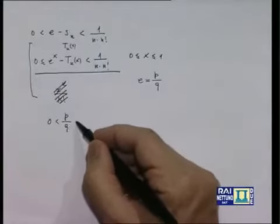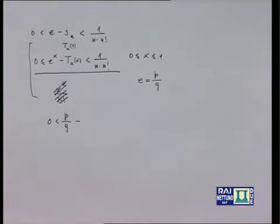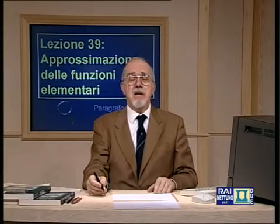Dimostrare una tesi per assurdo vuol dire assumere come ipotesi momentanea la negazione della tesi e far vedere come questa ipotesi conduca ad un assurdo. Supponiamo dunque che e = P/Q. Dalla disuguaglianza precedente: 0 < P/Q - Sₙ < 1/(n·n!). Sₙ si può scrivere come frazione con denominatore n!, con un certo numeratore naturale Pₙ. Riducendo a denominatore comune Q·n!, troviamo 0 < P·n! - Q·Pₙ < Q/n.